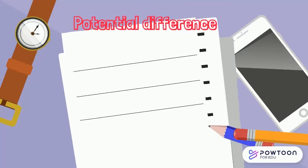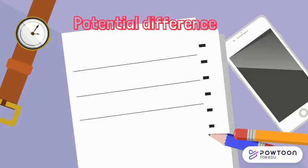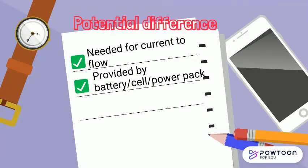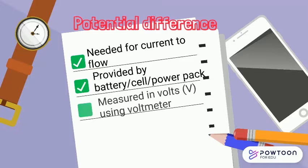Now I am going to explain something really important known as potential difference. This is important because it is needed for current to flow. It is provided by a battery, cell, or power pack, and it is measured in volts using a voltmeter. The potential difference across two components is always the same.